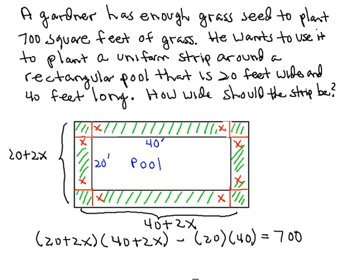So again, the area of the big rectangle with dimensions 20 plus 2X and 40 plus 2X, we'll take the area of that rectangle, subtract the area of the pool,